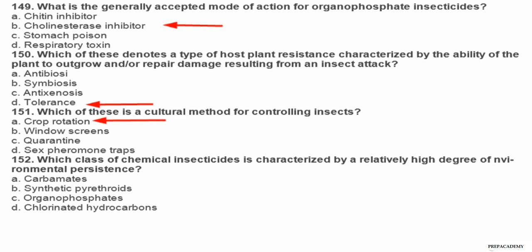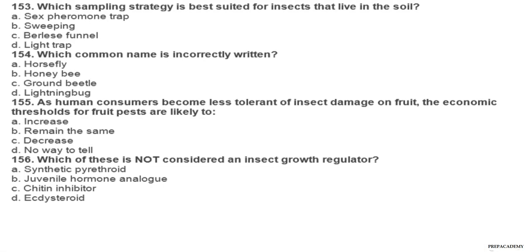Question 152. Which class of chemical insecticides is characterized by a relatively high degree of environmental persistence? A carbamates, B synthetic pyrethroids, C organophosphates, D chlorinated hydrocarbons. Question 153. Which sampling strategy is best suited for insects that live in the soil? A sex pheromone trap, B sweeping, C Berlese funnel, D light trap. Question 154. Which common name is incorrectly written? A horsefly, B honey bee, C ground beetle, D lightning bug.